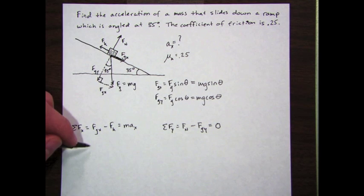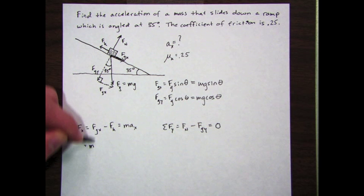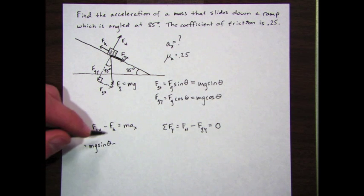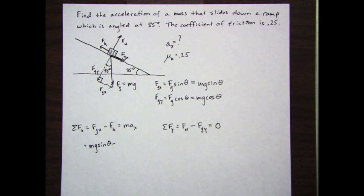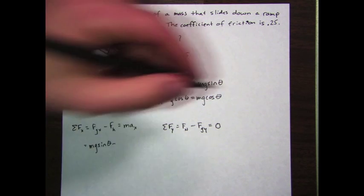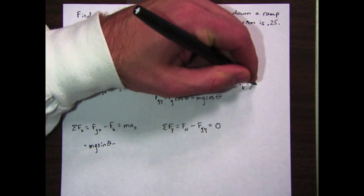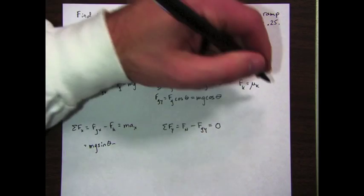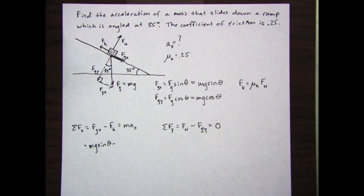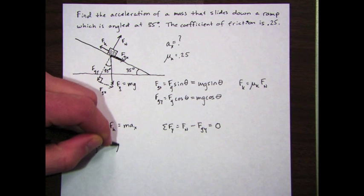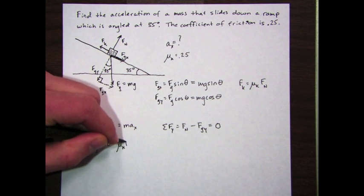I'm going to take mg sine theta, my f g x, and I'm going to put that in right here, mg sine theta minus f k.